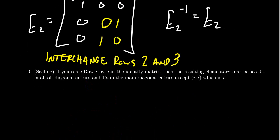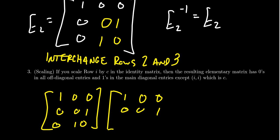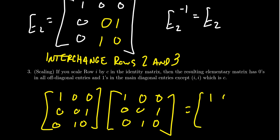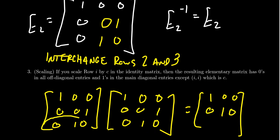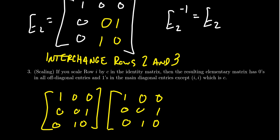Let's verify this for interchange matrices by squaring E2. Taking the first row times the columns gives 1, 0, 0. The second row times the columns gives 0, 1, 0. And the third row times the columns gives 0, 0, 1 — thus recapturing the identity matrix. Interchange matrices are their own inverses.